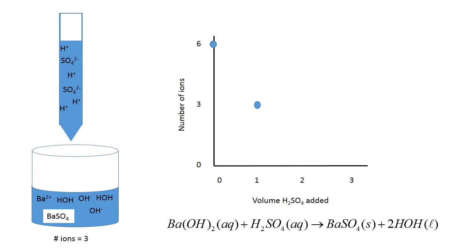I also have leftover barium ions and hydroxide ions in solution. My ion count now has dropped to three inside the beaker because I've formed the solid and water, so I've taken ions out of solution. Over here I've plotted the three ions after I've made one addition of sulfuric acid.